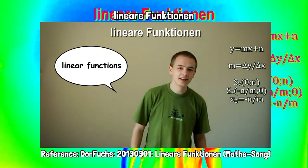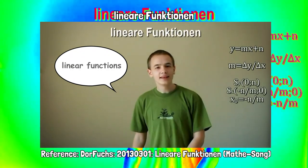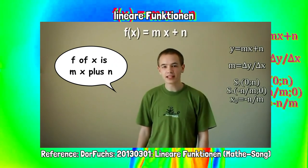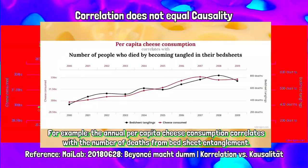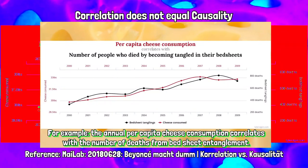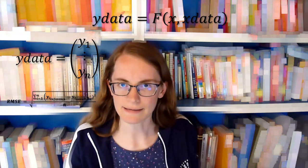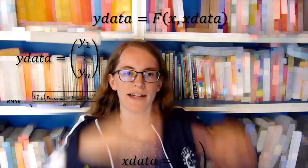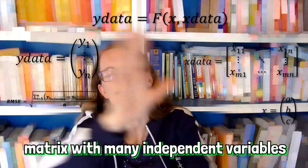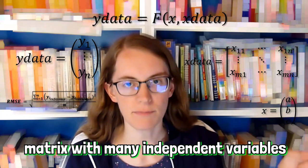Lineare Funktionen sind Geraden in einem Koordinatensystem. Linear functions: f(x) = mx + b. For example, the annual cheese consumption correlates with the number of bath heat entanglements. But the Supreme King Discipline is if you don't just have a vector, but a huge matrix of many datasets and data points with many independent variables.